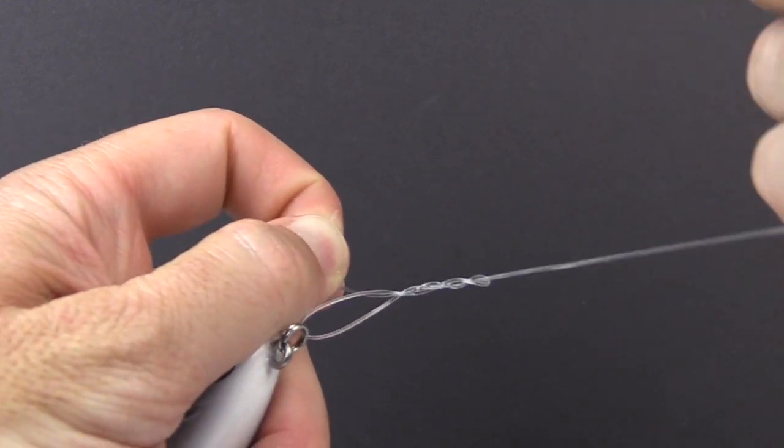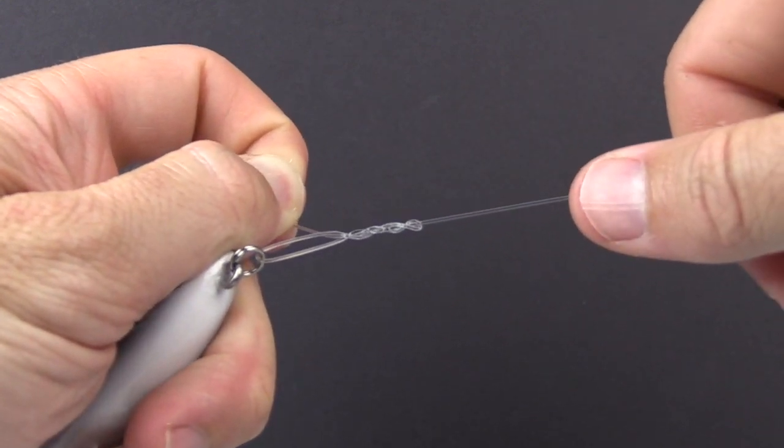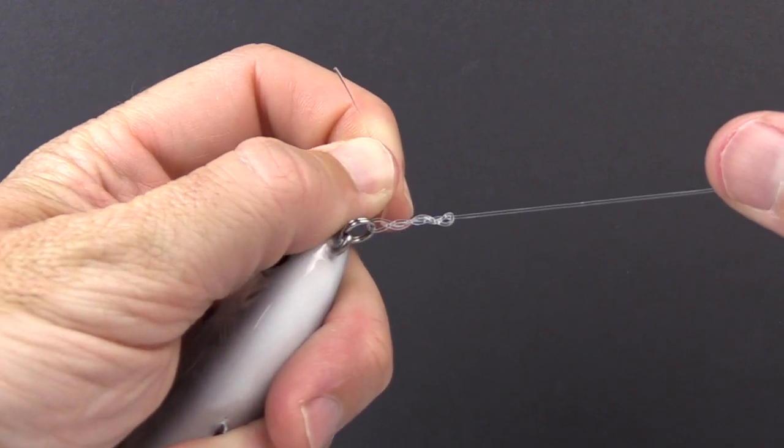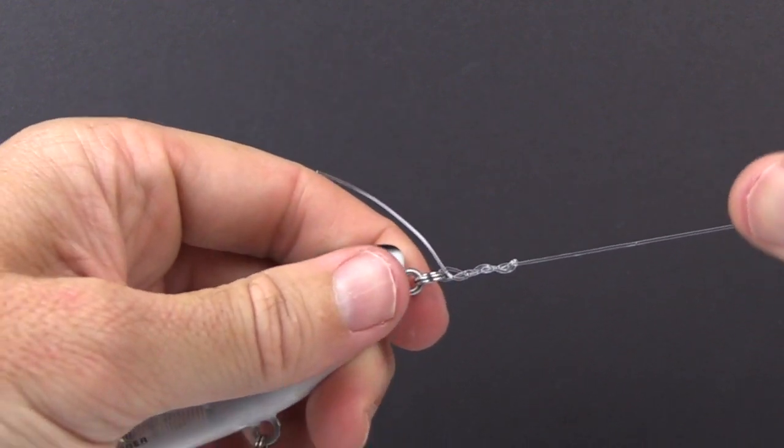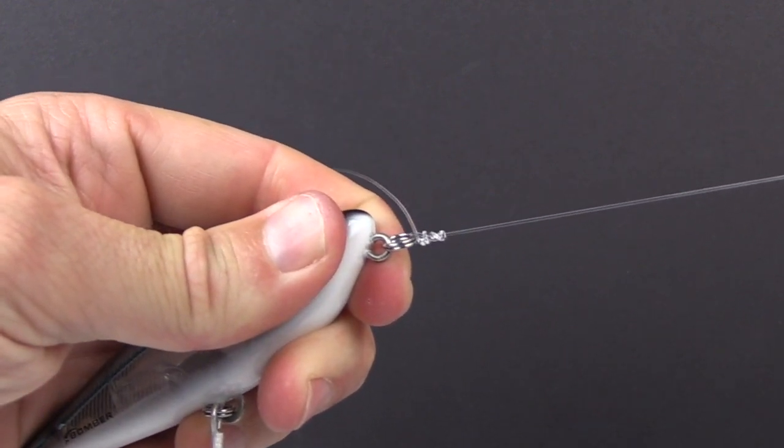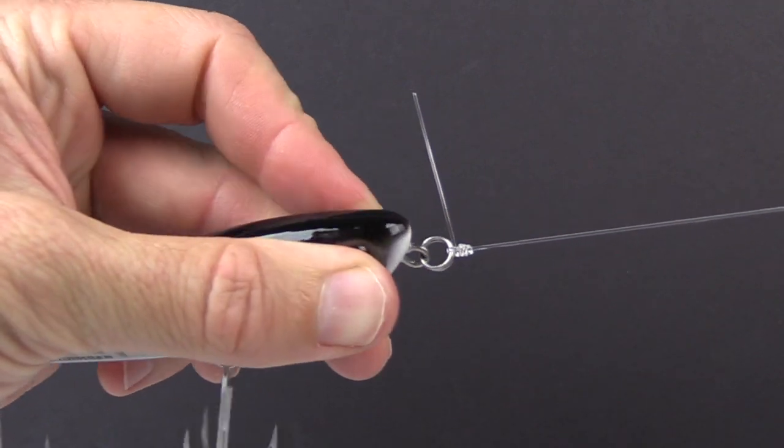And now we can start tightening it down. Let's go ahead and lubricate the line. All right so now I pull the tag end for the first bit, now I just totally let go of the tag and I'll just pull with a lot of force and that knot just cinches down.